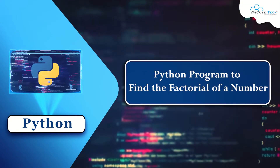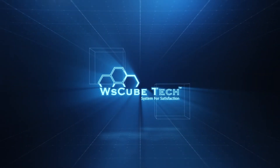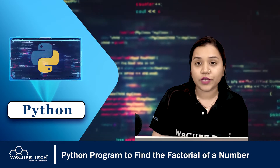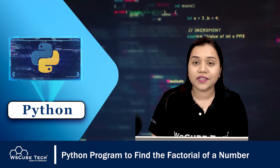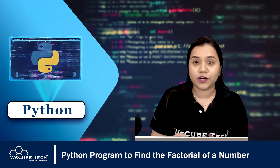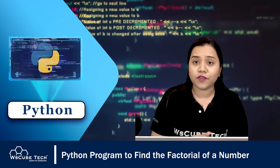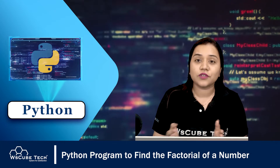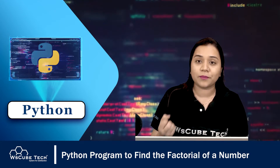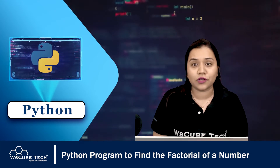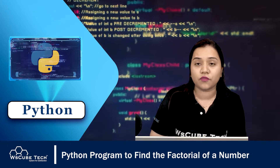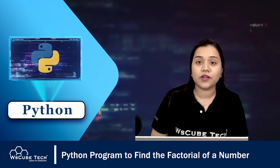The problem is to write a program in Python to find the factorial of a number. Welcome to Double This Cube Tech, my name is Ayushita. In this video we will learn how to find the factorial of a number. First, we need to understand what a factorial is, and then we will be doing two solutions: the first using a for loop, and the second using recursion.